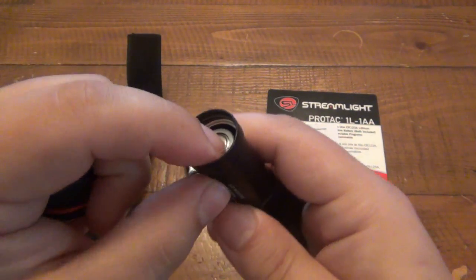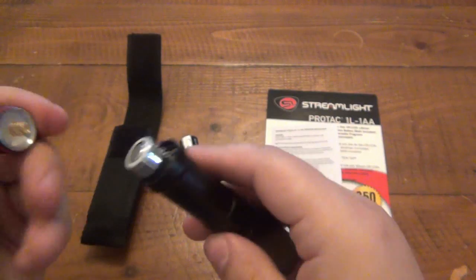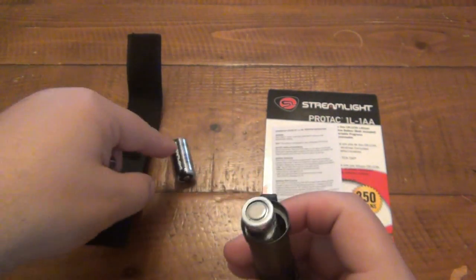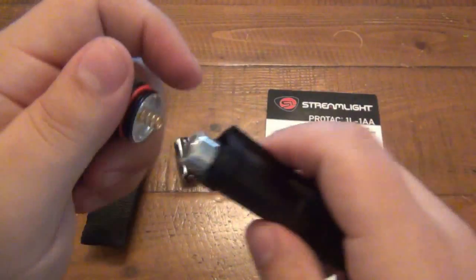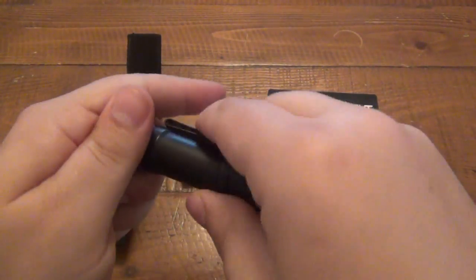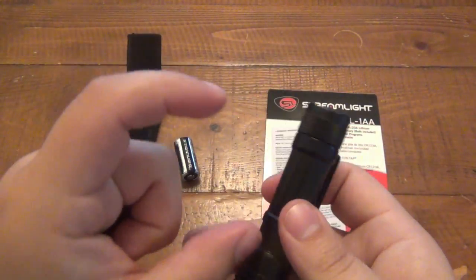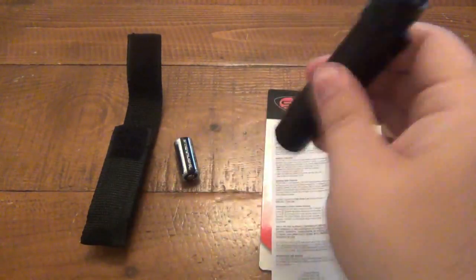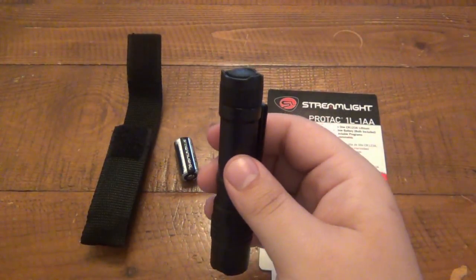So when you put the cap on it, it pushes down. And although there's wiggle room in here, it doesn't want to wiggle. Like this is wide enough for the CR123. Once you put your AA battery in there, it's kind of pressure fit. So it doesn't wiggle. There's a lot of pressure between those springs. So it works with AAs as well.